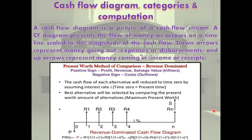First of all, Cash Flow Diagram Categories and Computation. A Cash Flow Diagram is a picture of a cash flow stream. A CF Diagram presents the flow of money as arrows on a timeline scaled to the magnitude of the cash flow. Down arrows represent money going out — expenses or disbursements — and up arrows represent money coming in — income or receipts. This is the Revenue Dominated Cash Flow Diagram; CF means Cash Flow Diagram.